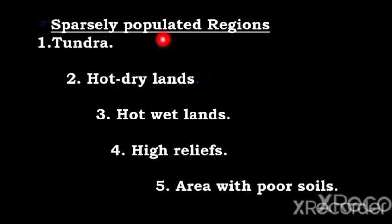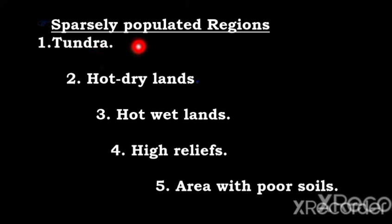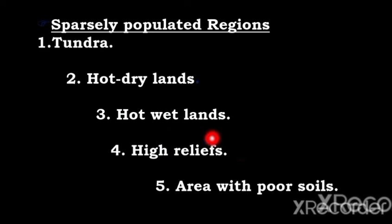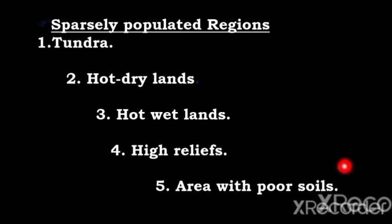Sparsely populated regions are called areas of less population concentration. Examples include Tundra; hot dry lands such as the Sahara, Atacama, Colorado, and Arabian deserts; hot wet lands such as tropical rainforests; high relief areas like Mount Everest and Mount Runsuri; and areas of poor desert soils.